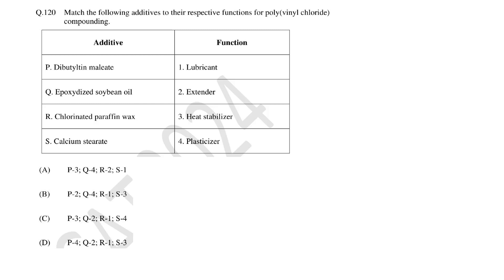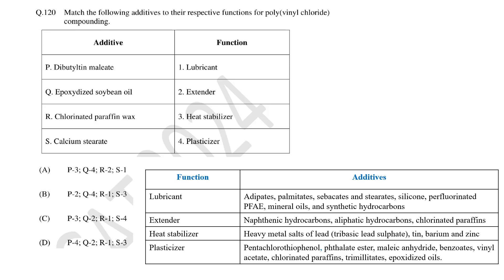In this question we need to match additive in PVC compounding with their functions. Polymers are generally mixed with different types of additives to achieve the best performance. For example, lubricants are chemicals that help to reduce friction between surfaces in contact. Examples are aliphatic esters, silicones, mineral oils.